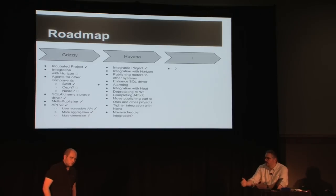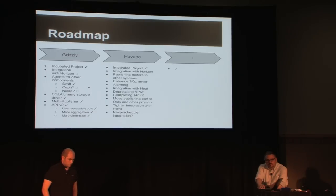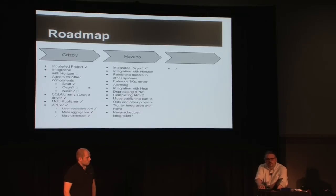Heat will be our first consumer, but you could have all kinds of consumers for alarming. For example with Swift: if a user has already used up all their quota disk space, you could trigger a notification to tell Swift that this user cannot upload more. Ceilometer-implemented Swift quotas already exist through middleware, but alarming gives you another way.